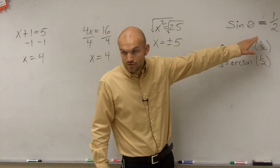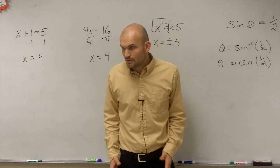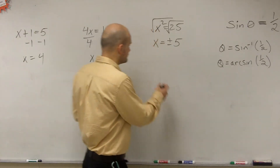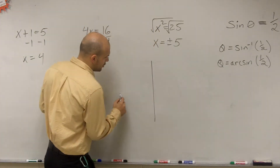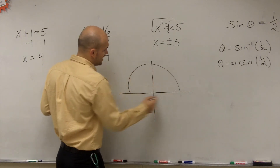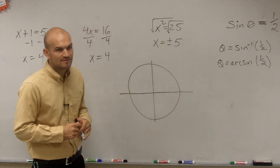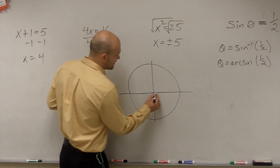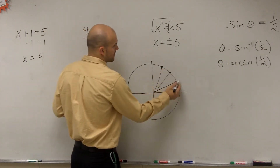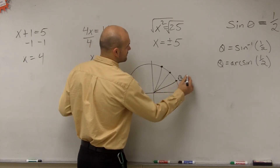What this says is: sine of an angle theta equals 1/2. So let's go and take a look at when does the sine of theta equal 1/2. If we go back to our unit circle, we need to determine when our value is going to equal 1/2. Hopefully you remember we have three major points here. The first one is (√3/2, 1/2), then (√2/2, √2/2), and then (1/2, √3/2).